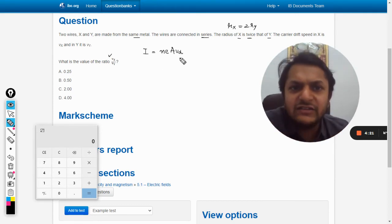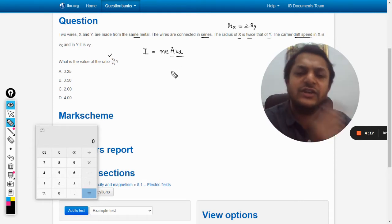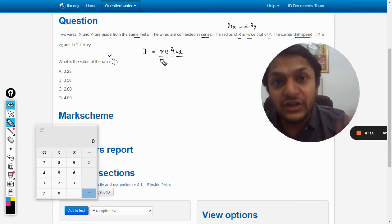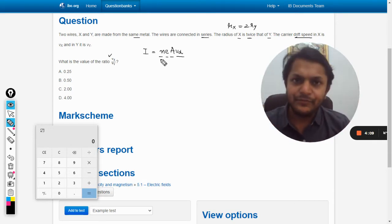So vd is basically the drift speed, a is the cross-sectional area of the wire, e is the charge on the electron, n is the number of electrons per unit volume in that metal.